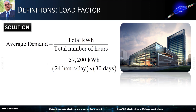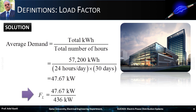To calculate the load factor, we first determine the average demand: 57,200 kilowatt hours divided by 24 hours per day times 30 days per month, which equals 47.67 kilowatts. Therefore, the load factor is the ratio of the average demand of 47.67 kilowatts divided by the maximum demand of 436 kilowatts, times 100%, which equals 18.22%. As you can notice, this is a low load factor, indicating that the maximum demand occurs only occasionally.